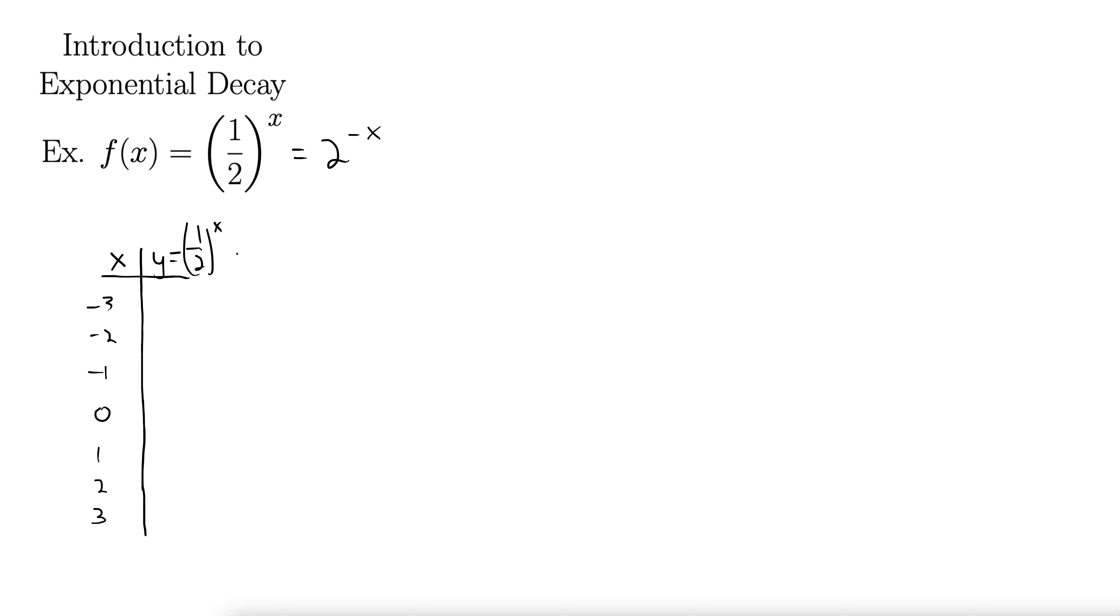So 1 half to the negative 3, well that negative is going to flip it, so this will actually be flipped up, so 2 over 1 to the 3. Well 2 over 1 is just 2, 2 to the 3 is 8. So negative 3, we're at 8.